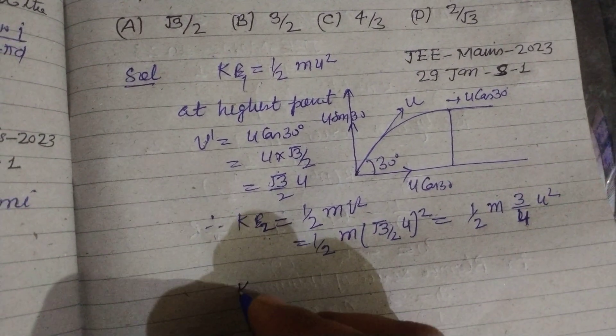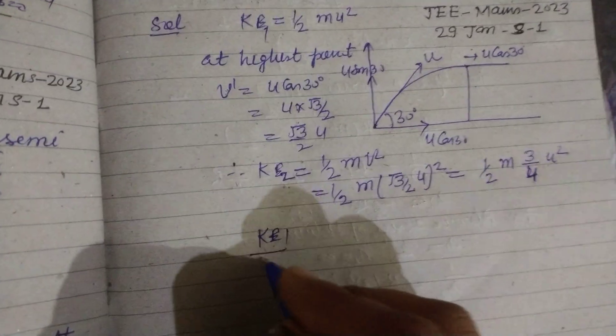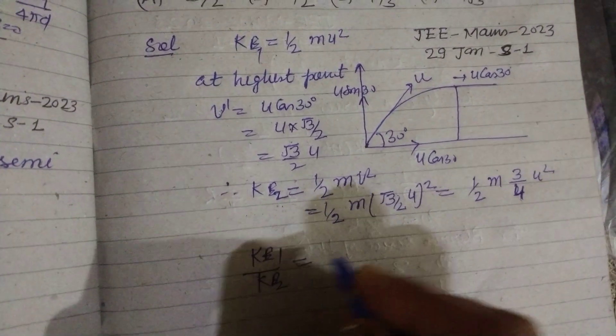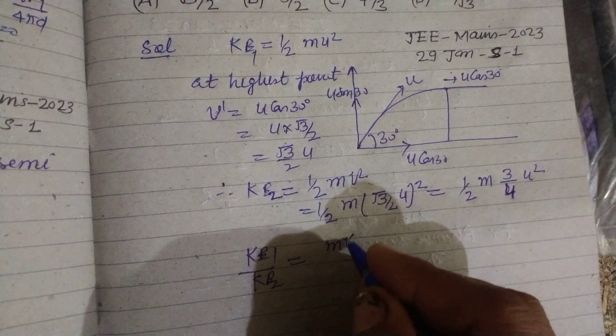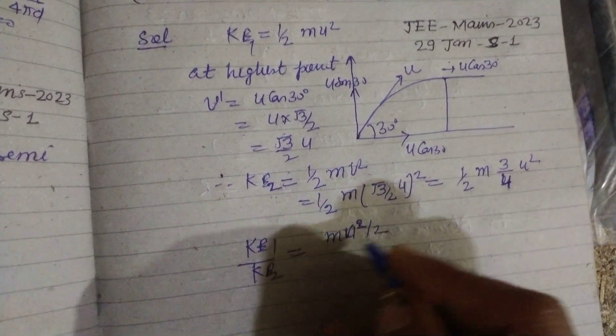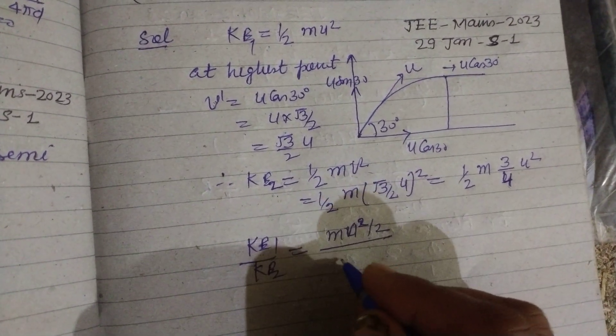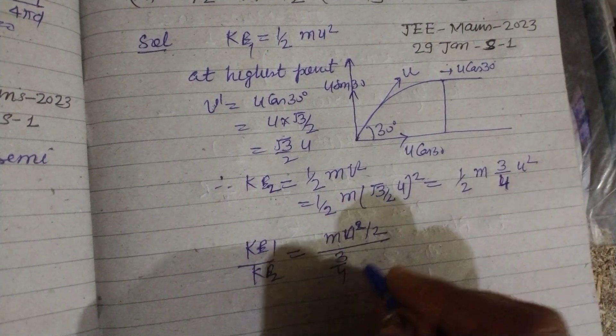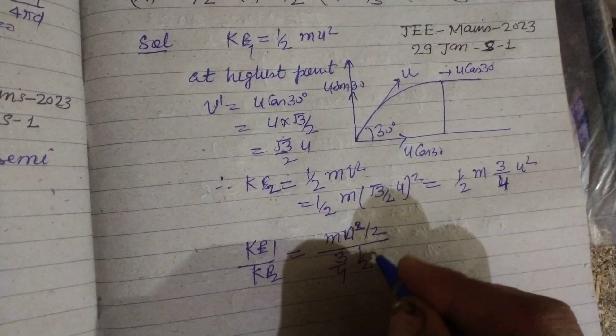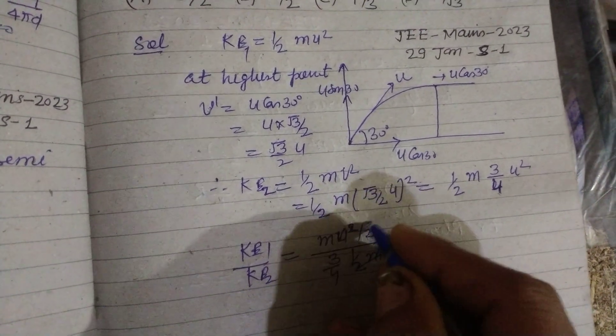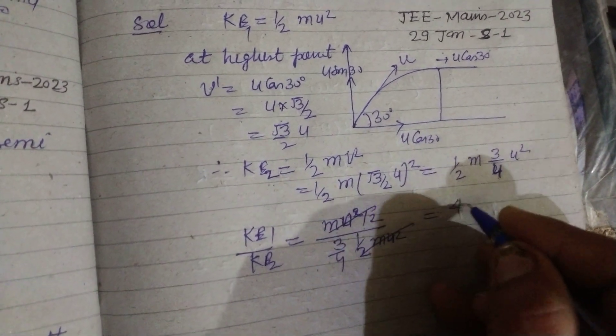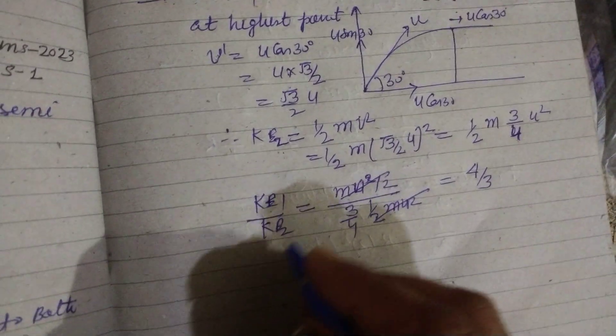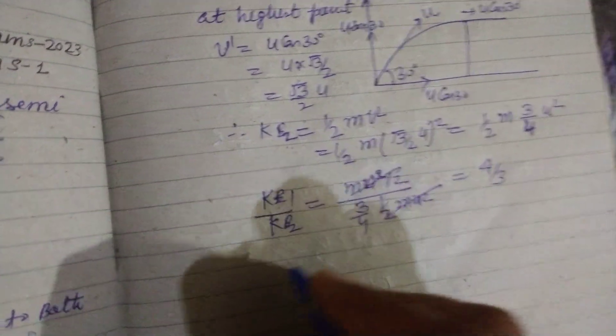Now KE1 upon KE2 equals half m U squared upon 3 by 4, 1 by 2 m U squared. So this cancels out. We got 4 upon 3. So this 3 by 4 becomes 4 upon 3.